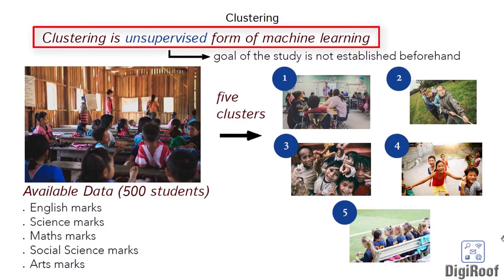Now let's understand clustering, which is an unsupervised learning method. As the name suggests, in such learning methods, we don't know the goal of the study at the onset. As you explore your data, you try to identify groups that share similar kind of characteristics. These groups are called clusters.